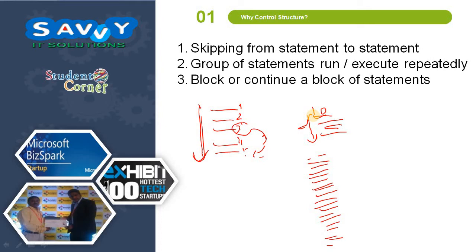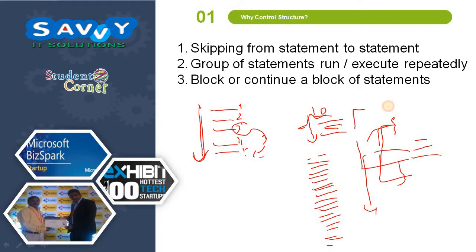The next reason is block or continuing a block of statements. In between the block, whatever statements we write belong to that particular block. We need to either exit or continue again from the start with the help of control structures. This also did not happen previously. To overcome these three problems — skipping from statement to statement, group of statements run or execute repeatedly, and block or continuing a block of statements — control structures were introduced, as these cannot happen in sequential execution.